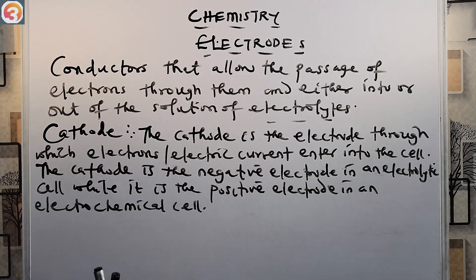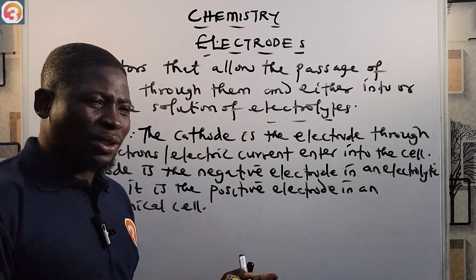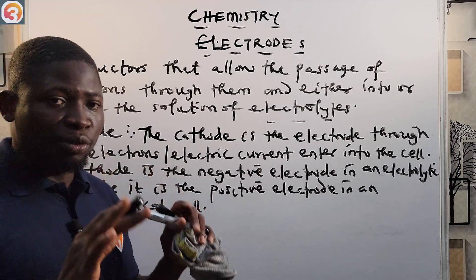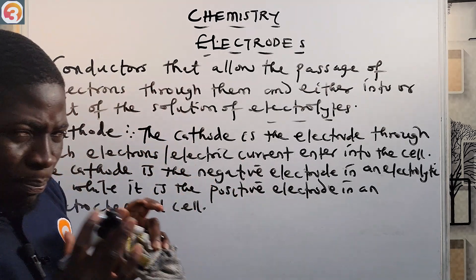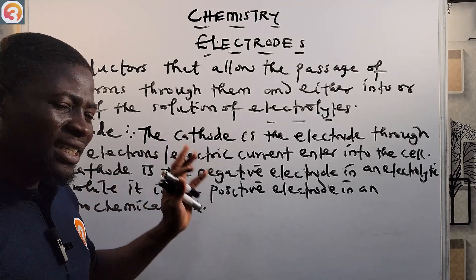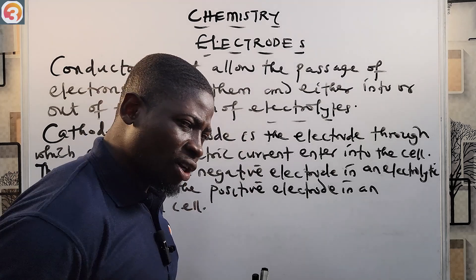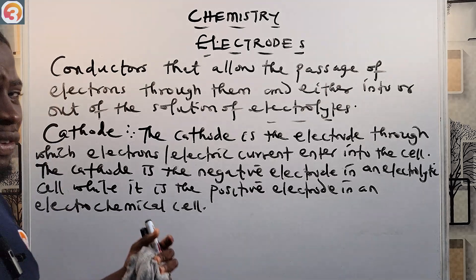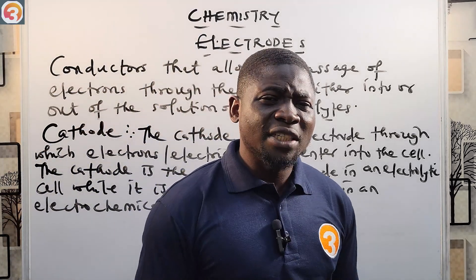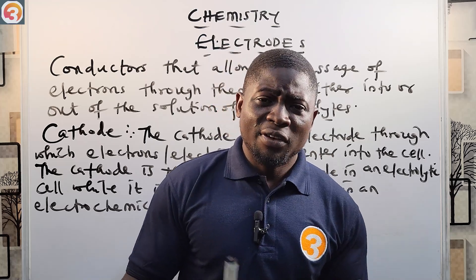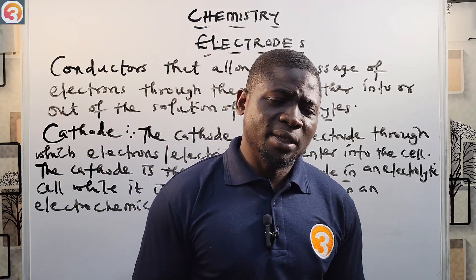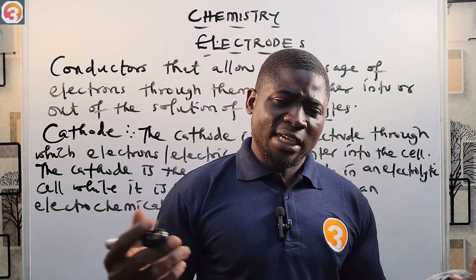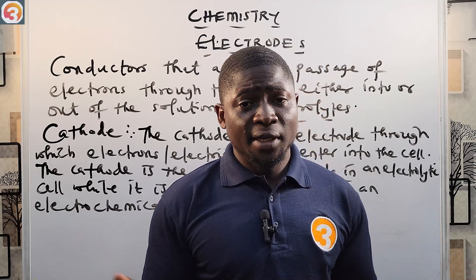I want to do a special video dedicated to the difference between an electrolytic cell and an electrochemical cell. For now, just understand that the electrolytic cell consumes or destroys electric current, while the electrochemical cell produces or generates electric current. If you haven't liked this video, please do so now, and subscribe to the channel so you're first to know when we publish a new video.